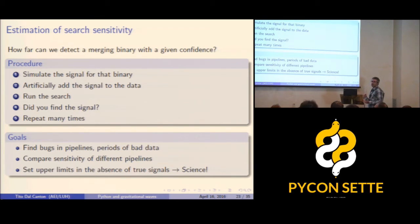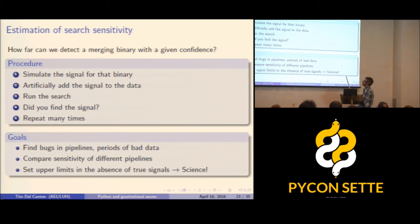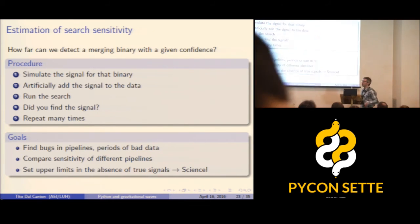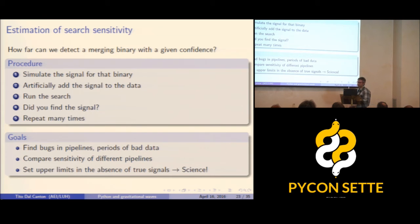We also estimate the sensitivity of the search by simulating signals, adding them artificially to the data, running the search, and checking if we find them. By repeating this many times, we can find bugs in pipelines, compare the sensitivity of different pipelines, and in the absence of detections, do some science and rule out models predicting high merger rates.